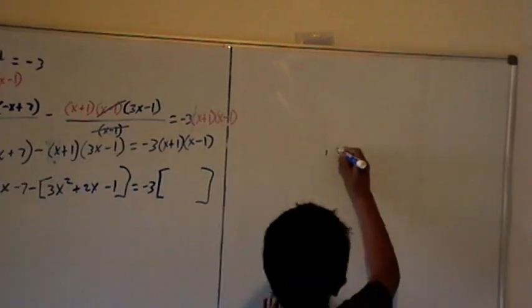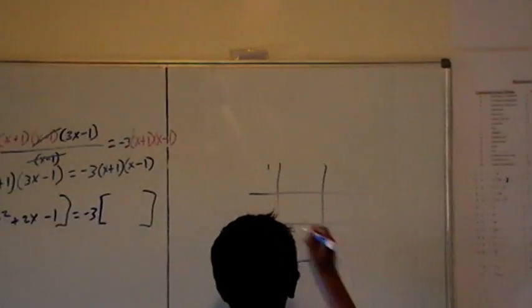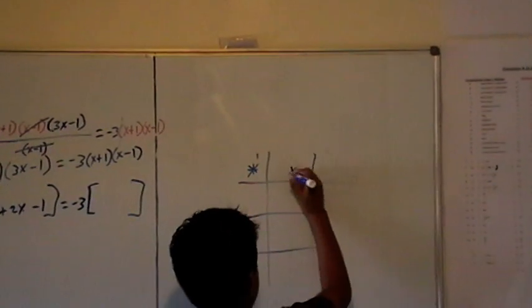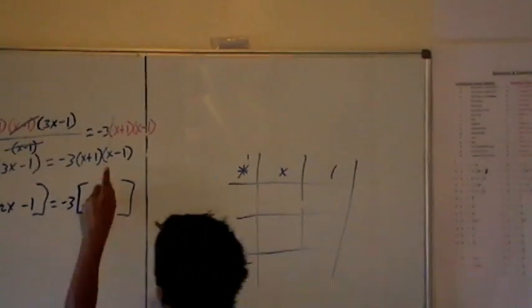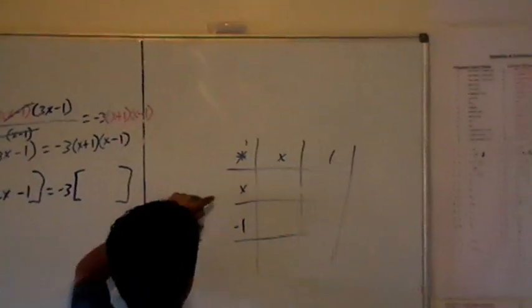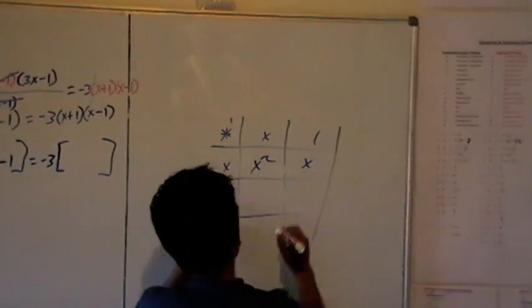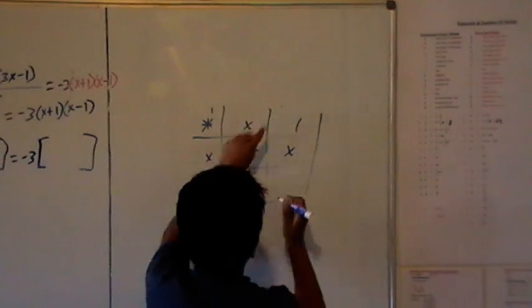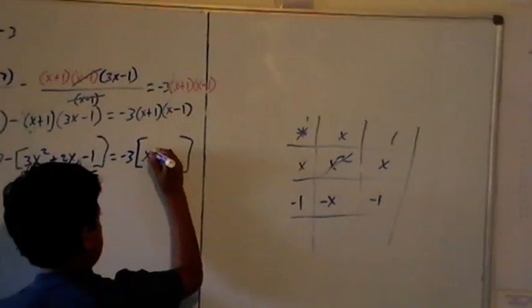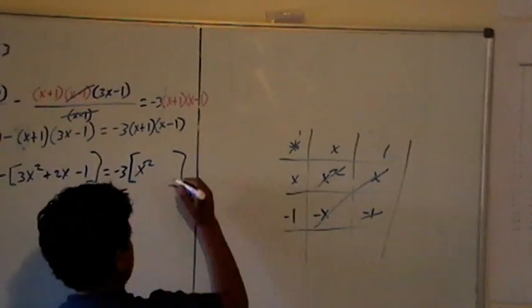Equals minus 3 times, I'll do the lattice method again. x plus 1 up the top, x minus 1 down the bottom. Now multiply: x squared, x minus x minus 1. Now add the diagonals: x squared, that's zero so we don't bother writing it, minus 1.